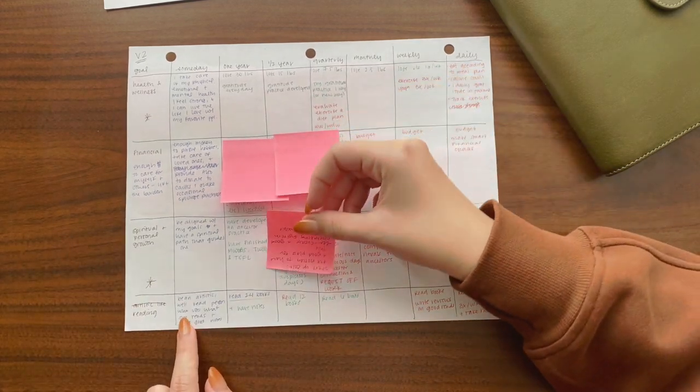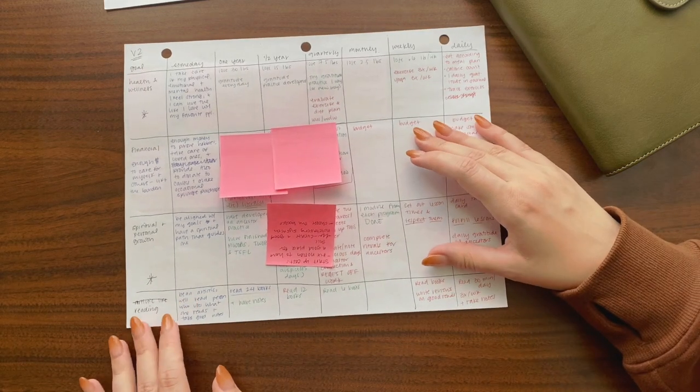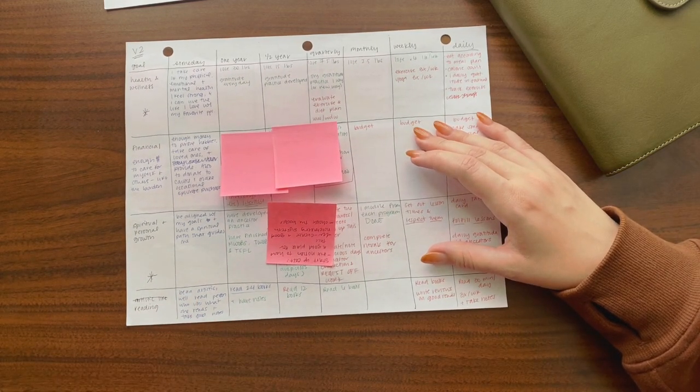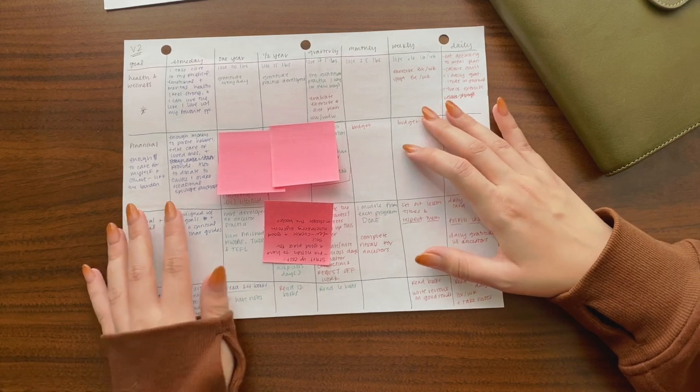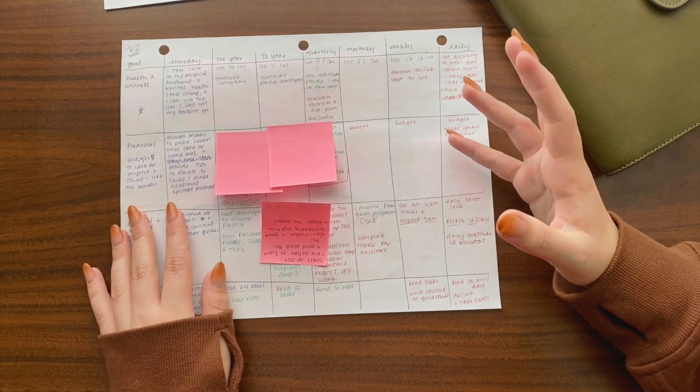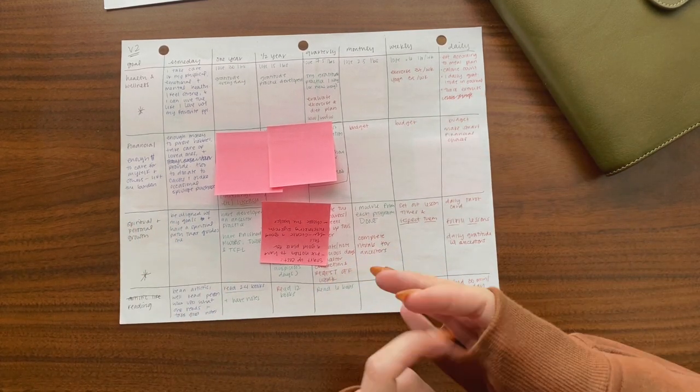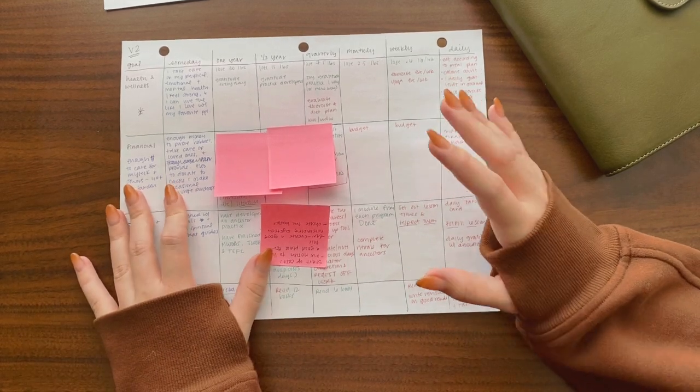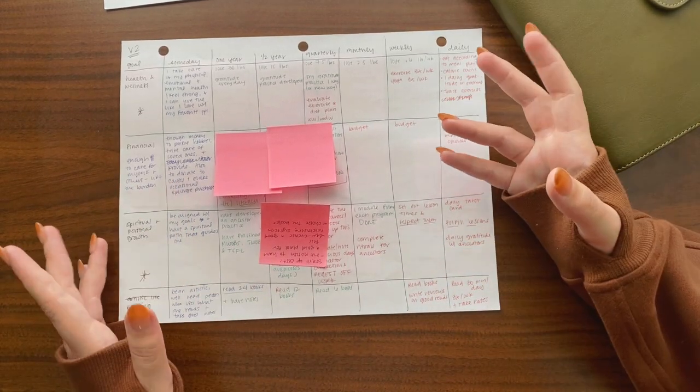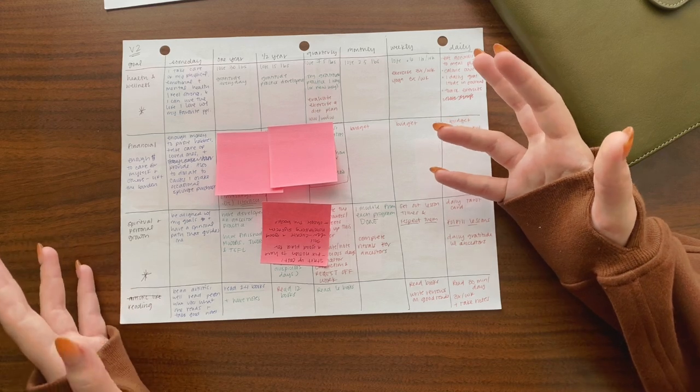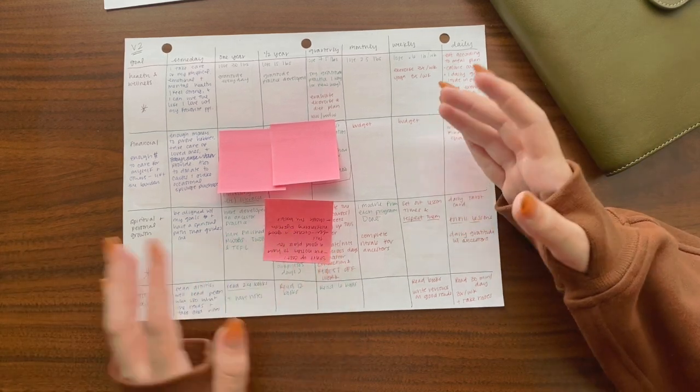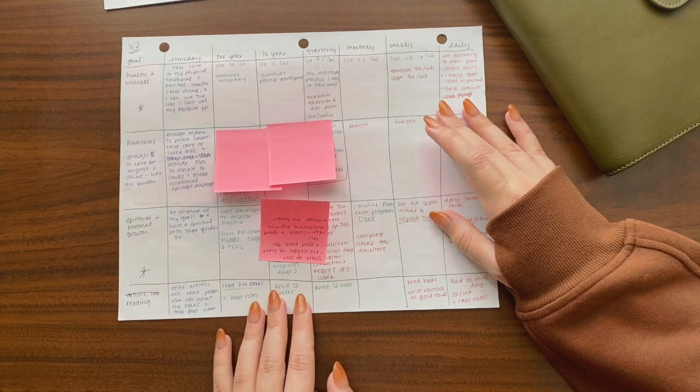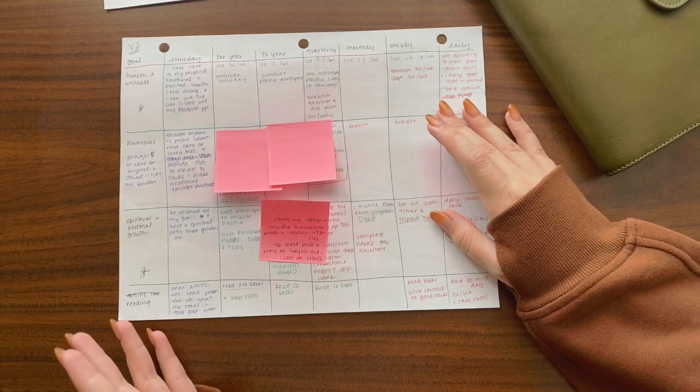Then down here at the bottom, I have reading, which is actually a pretty simple goal. I just want to eventually be an artistic and well-read person who reads and uses what I read. I used to read a ton before I went to college and before I started my adult life. And I just really miss who I was when I was a reader. I really miss knowing things and always having a book to talk about.